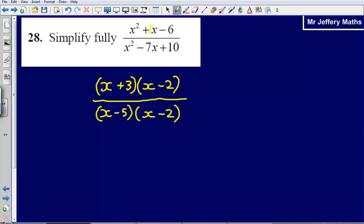Now what I can see here is that I have the same factor in the top as I have in the bottom, and so I can divide through these, and these will cancel each other out. And so my final answer will simply be x plus 3 over x minus 5.